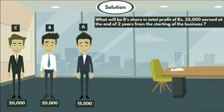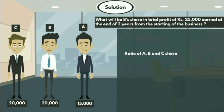At the end of two years, the ratio of A, B, and C's share is 20,000 × 24 : 15,000 × 24 : 20,000 × 18.